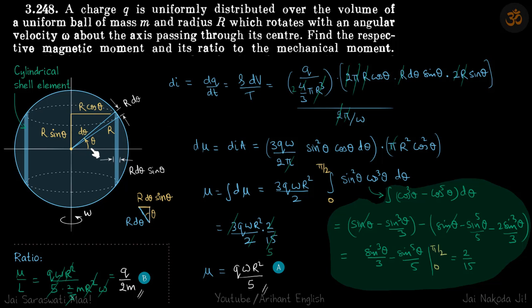So here we at an angle theta will take this, this is d theta. So if this is d theta, the width of the cylinder is r d theta sin theta. So you can see from this diagram also. So this part is r d theta.